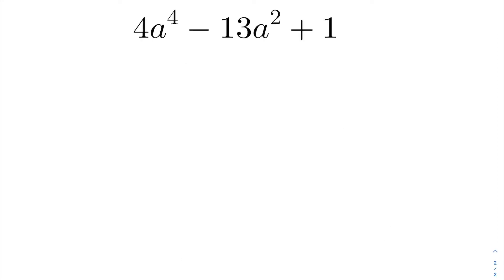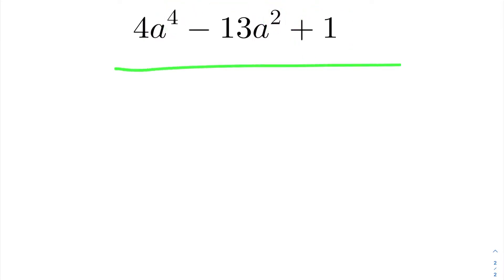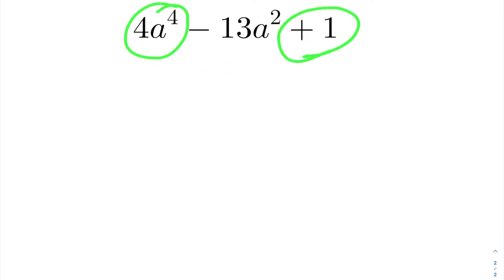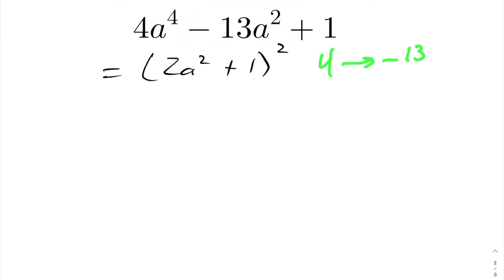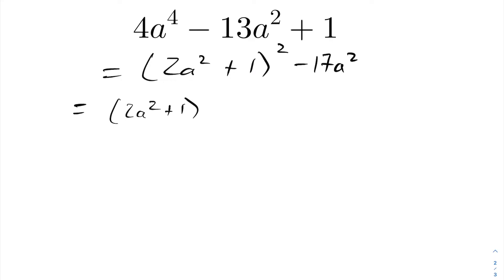For the next example, notice it has a quadratic look: exponent 4, then exponent 2 (exactly half), then a constant. We observe that 4a to the fourth and 1 are perfect squares. If we try writing it as 2a squared plus 1, squared: squaring gives 4a to the fourth and 1, but the middle cross term generates 4a squared. We want minus 13a squared, so we need to subtract 17a squared — this is an incomplete square.